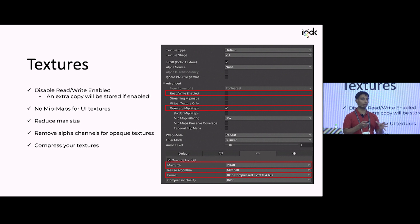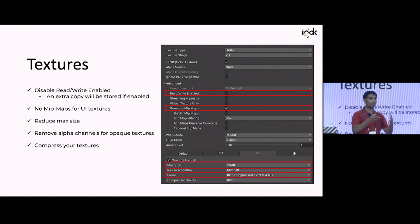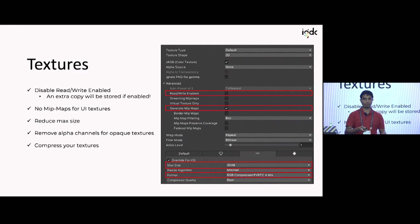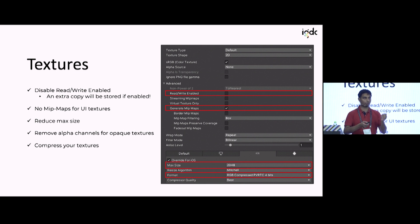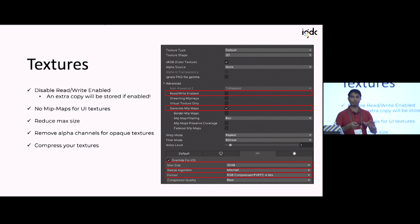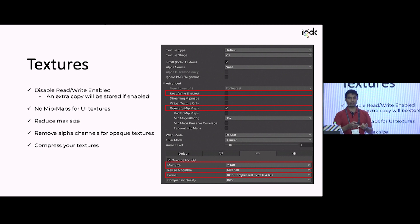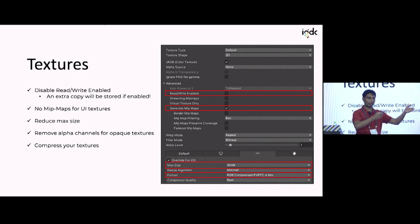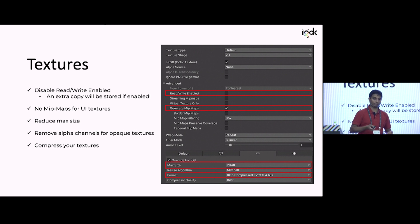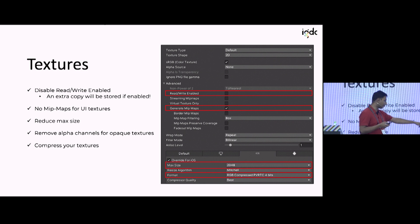However, for assets where you always have a fixed camera angle — especially UI — you don't need mipmaps, so just disable them. When Unity generates mipmaps it generates half, quarter, one-eighth, and so on, which roughly comes out to about 2x the memory. Be very careful with that.